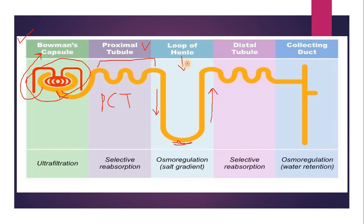This is called the loop of Henle, also known as LH in short form. The next part is the distal convoluted tubule, or DCT. After the DCT, the end of the distal tubule leads to the collecting duct, which is also present in the medulla. The collecting duct is meant for water retention and osmoregulation — whatever water remains passes into the collecting duct and then into the bladder. This is all about the structure of the nephron.